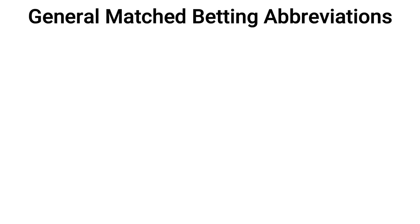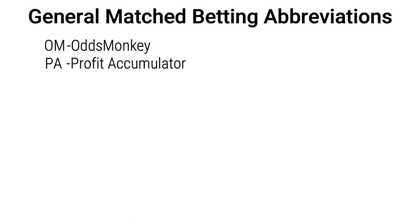In the general match betting abbreviations, we firstly have OM which stands for Odds Monkey — that's the match betting software you need to use to do match betting properly. Moving on from OM, you have PA which is Profit Accumulator, their competitor for match betting software.